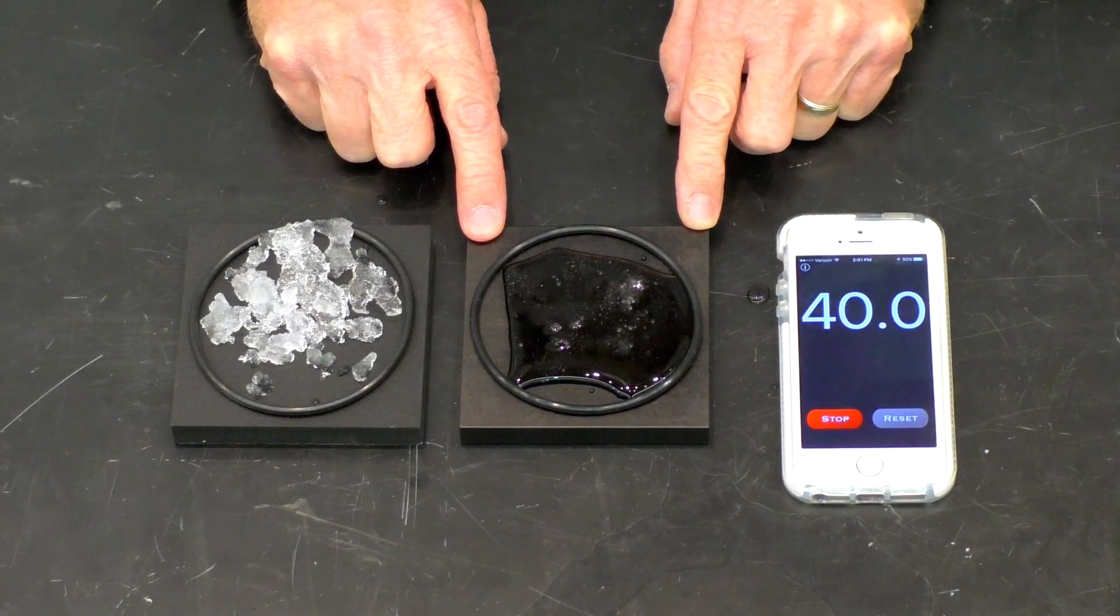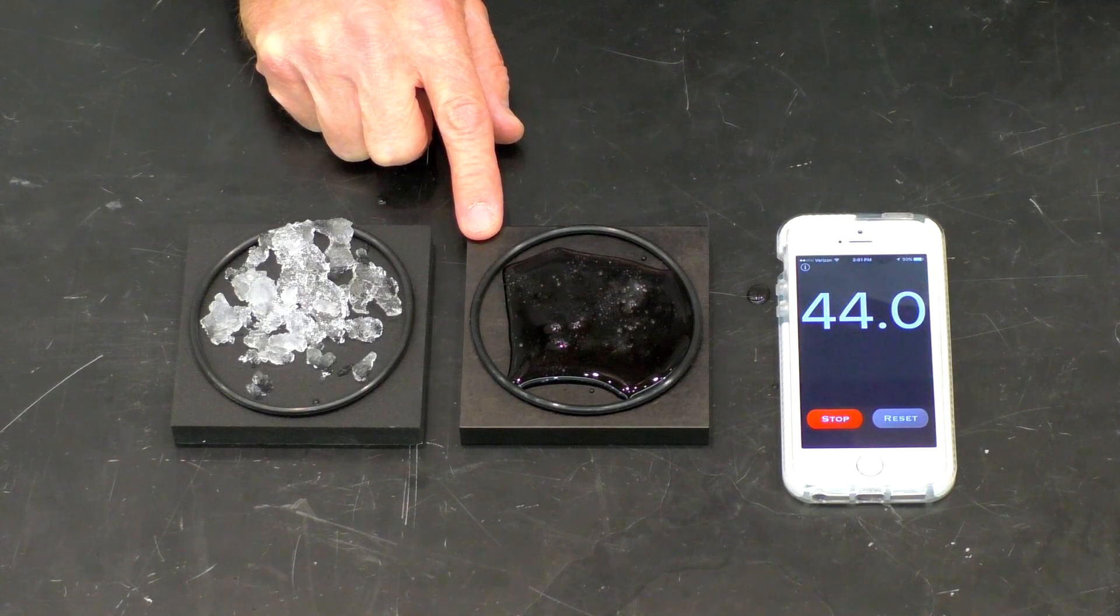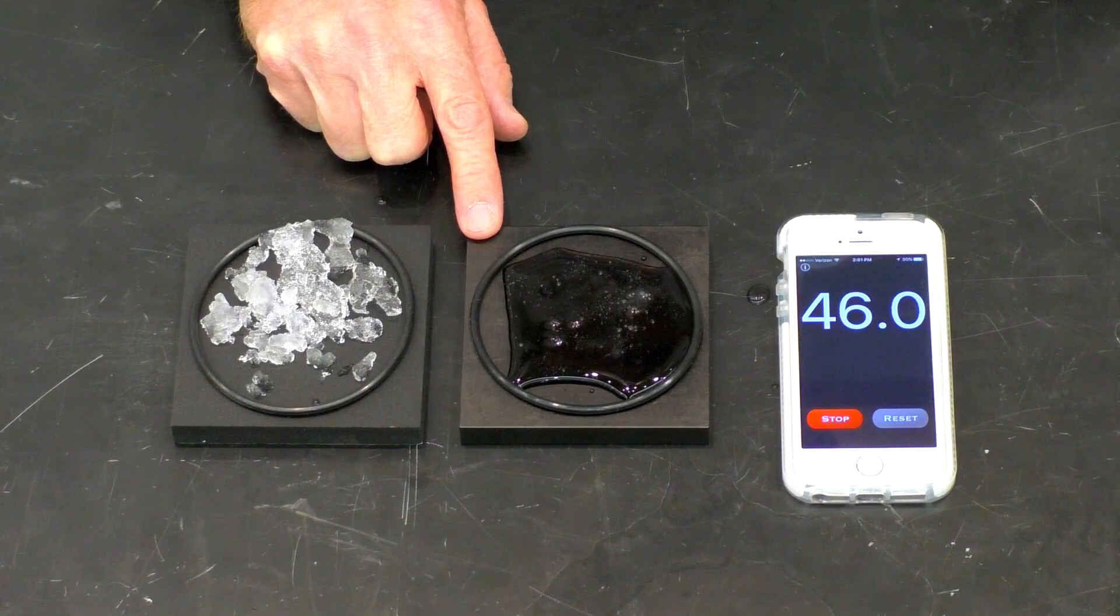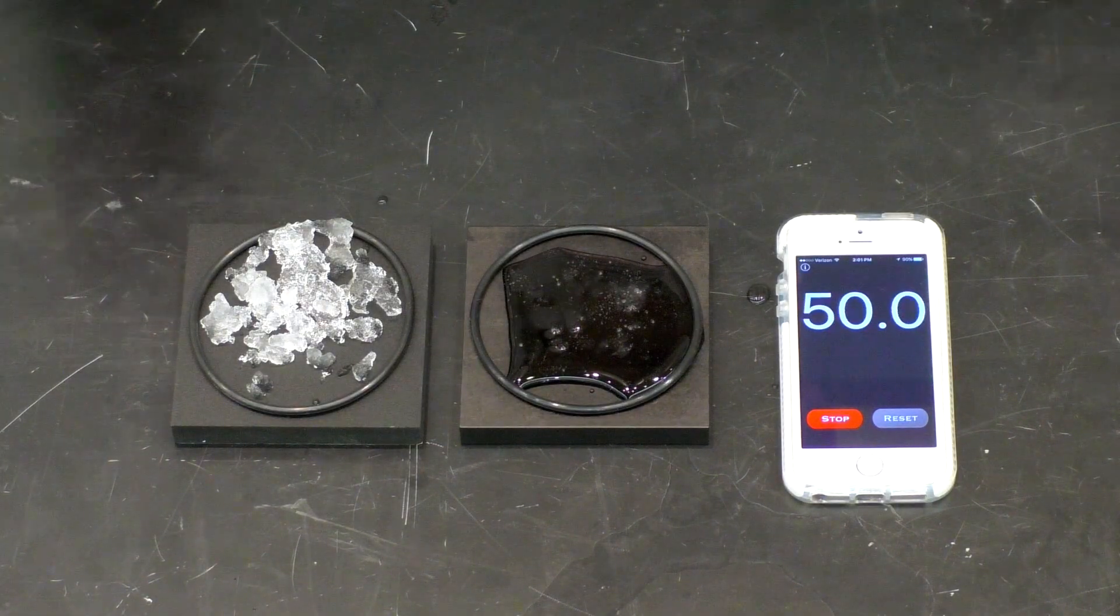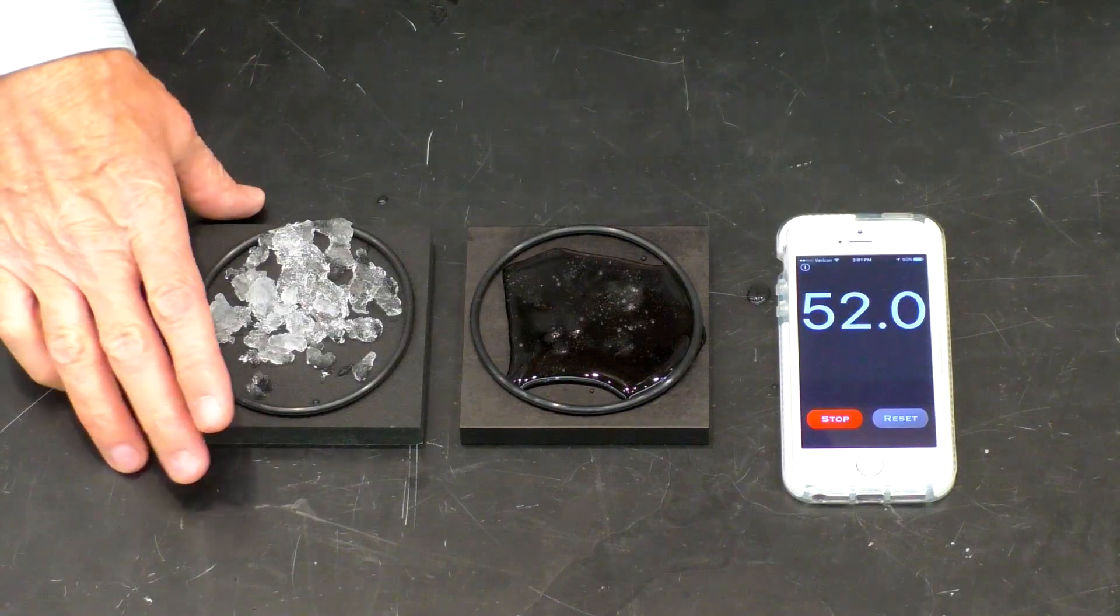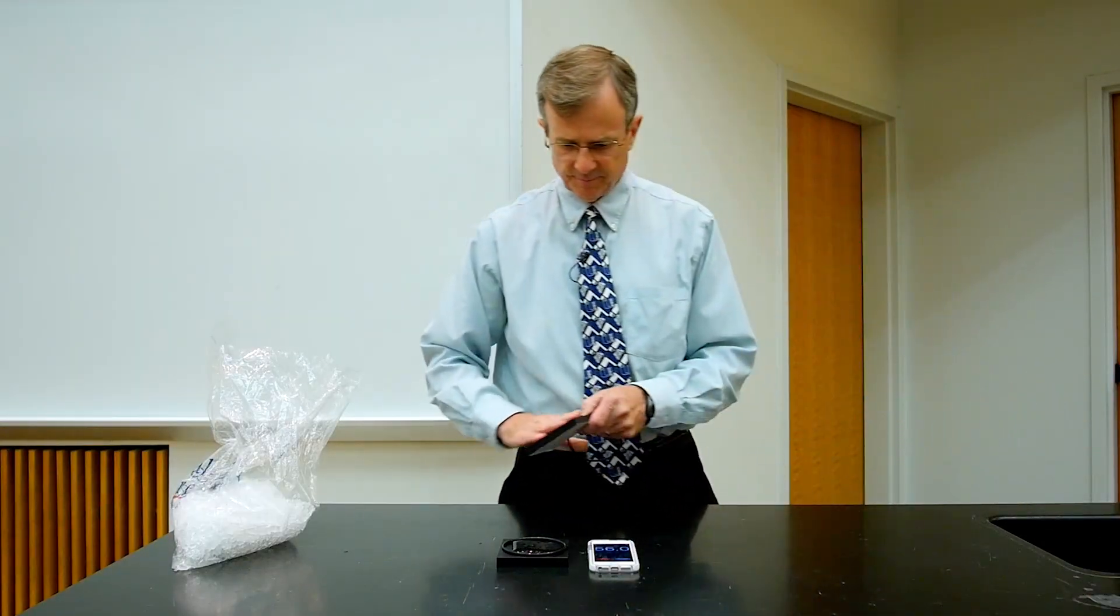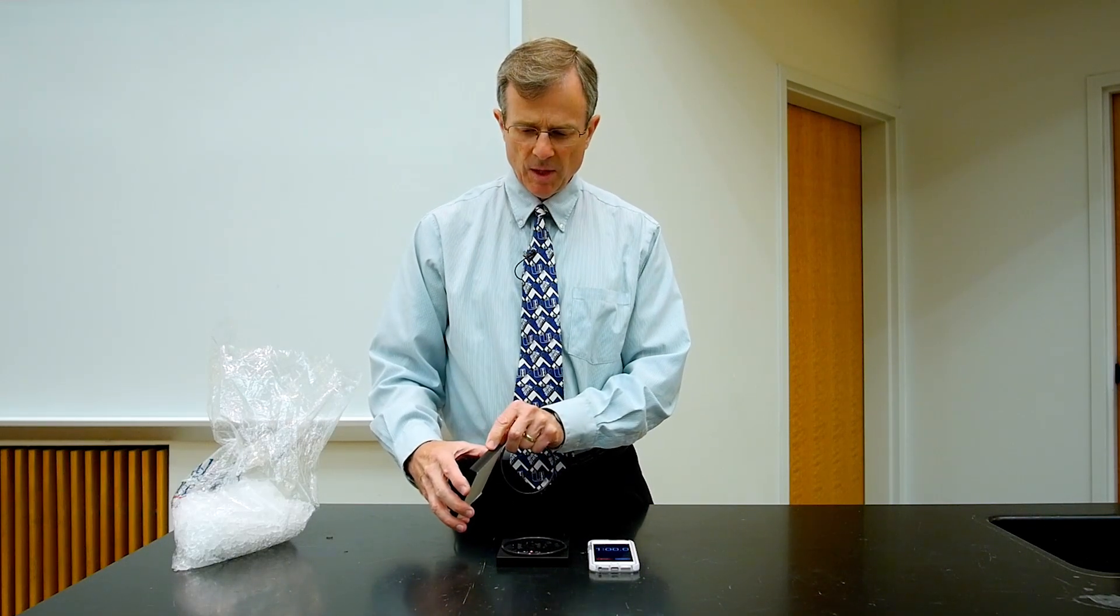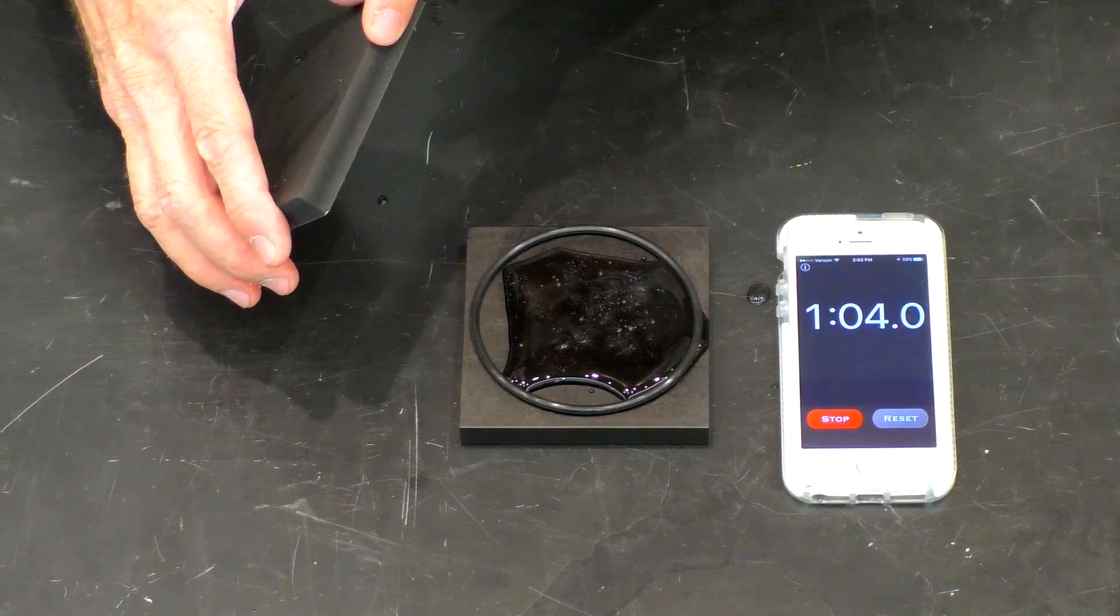This block is actually aluminum, which is one of the best thermal conductors of the known materials that we have that are easily accessible. This one is a foam material. It has a lot of air pockets in it, and it's a very poor thermal conductor.